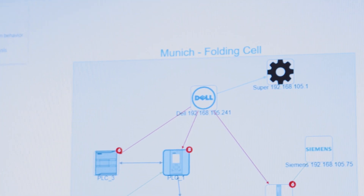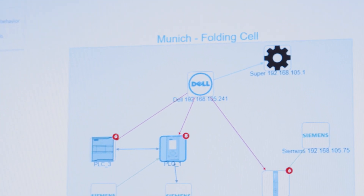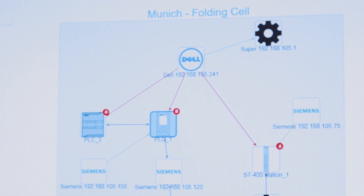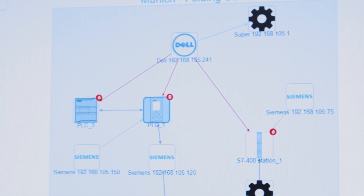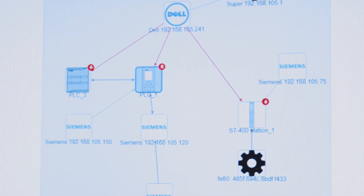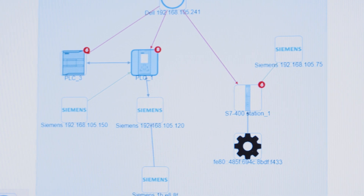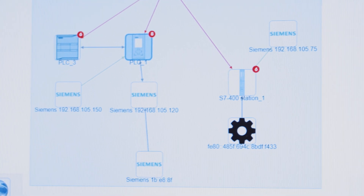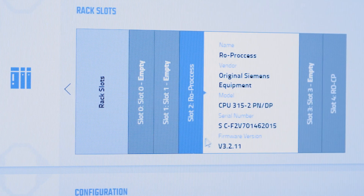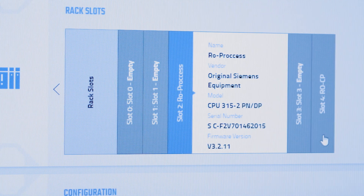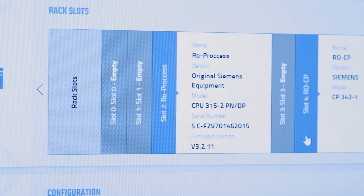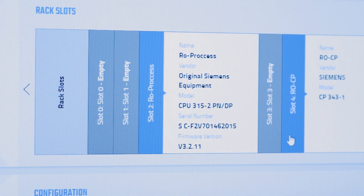This enables the following. One: based on the network traffic, we identify all parties involved in detail. What PLCs are available? What serial number? What software and hardware status do they have? What HMI are available? And what other automation components?